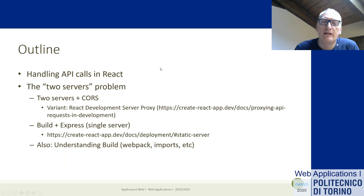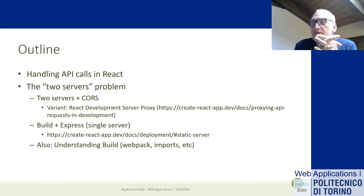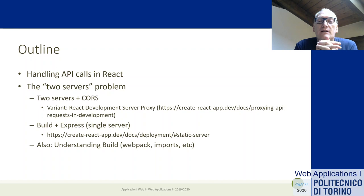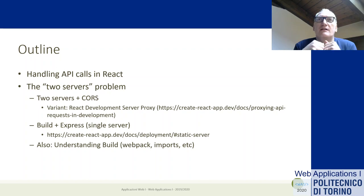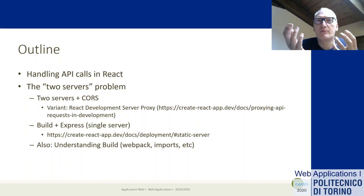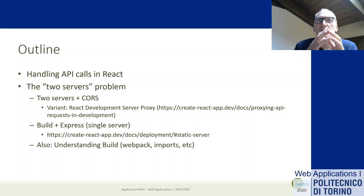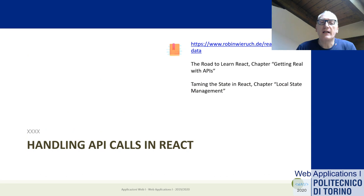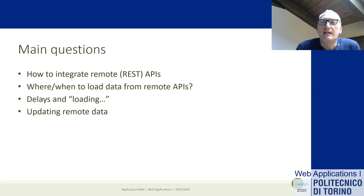We will first look at how to integrate API calls into React — we already mentioned something but want to be more specific, giving some guidelines. Then we'll see practical information about dealing with the two-server problem, especially during development. We are not giving solutions that scale to production — we are focused on creating a development and testing environment where everything works together. Our goal is not security, performance, or reliability, but a good development environment.